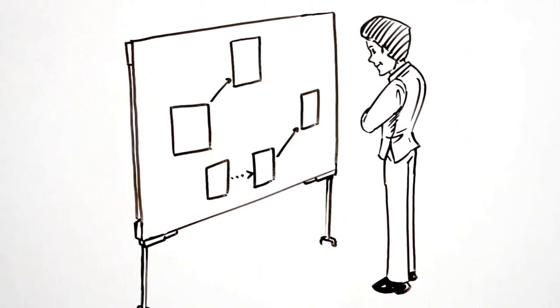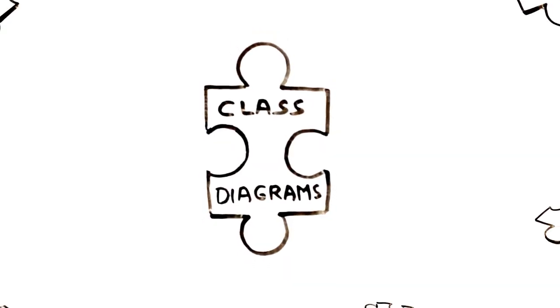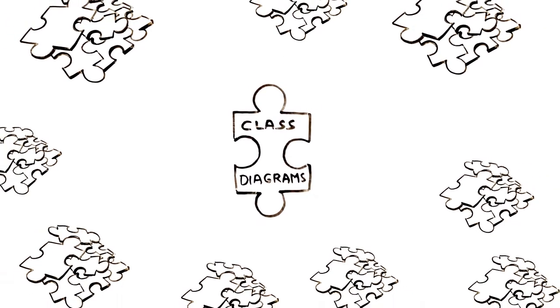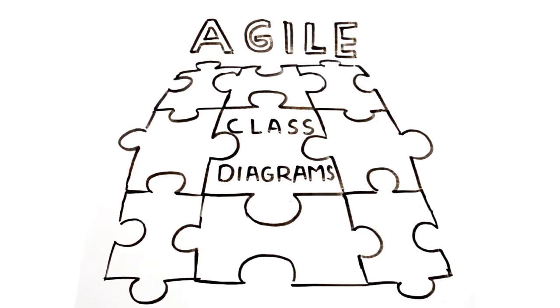Programmers like class diagrams. There's a warm reassurance about seeing what owns what, what depends on what, and what specializes what. So what if we keep class diagrams and place the rest aside? Let's see if we can get class diagrams working again for the greater good of the software industry.